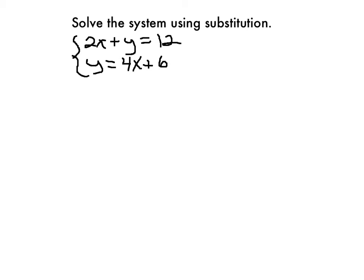When you're asked to solve this system 2x plus y equals 12 and y equals 4x plus 6, we see that 2x plus y equals 12, but down below we have this equation solved for y.